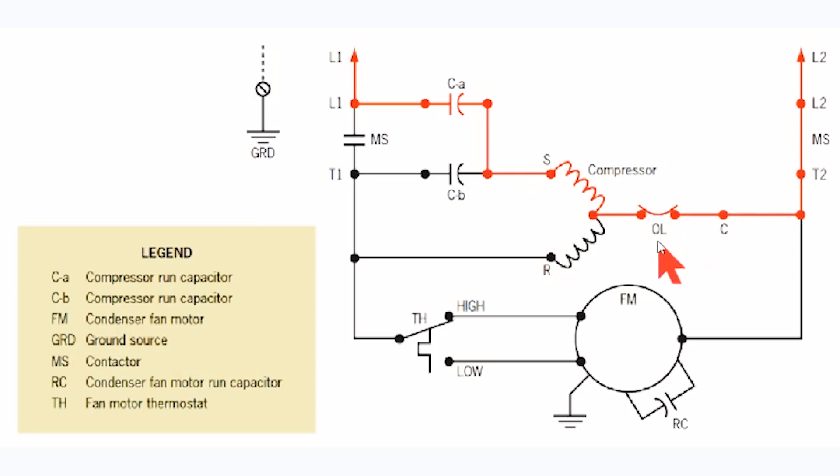What we have here is two run capacitors wired in parallel with each other. With run capacitors, if you wire two in parallel, the total microfarad capacity adds together. Say you need a 40 microfarad capacitor and you don't have one - you can use a 30 and a 10 in parallel and you'll get 40 microfarads. A lot of you use that every day.